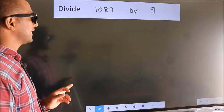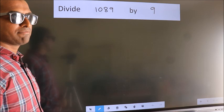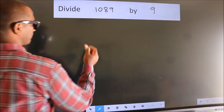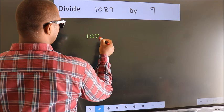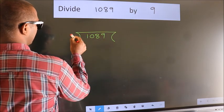Divide 1089 by 9. To do this division, we should frame it in this way. 1089 here, 9 here.